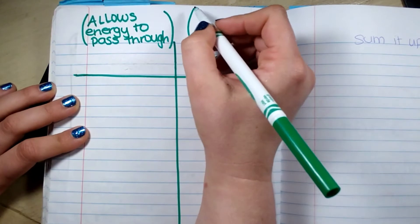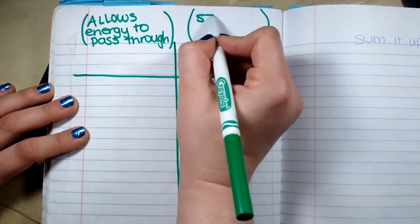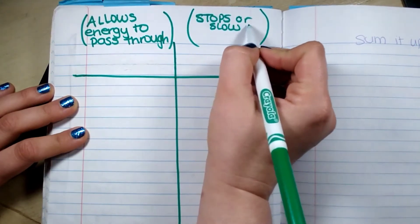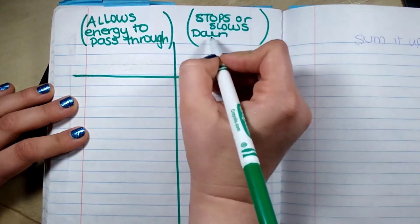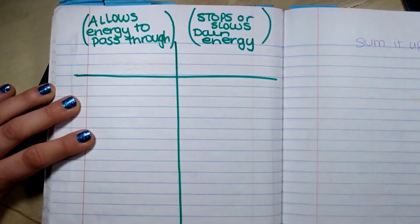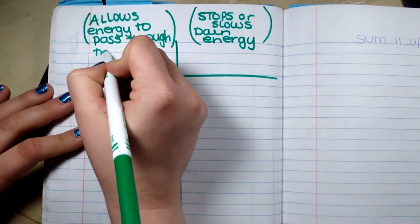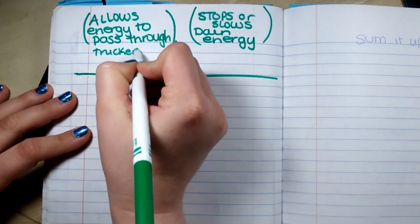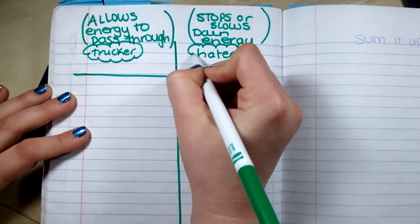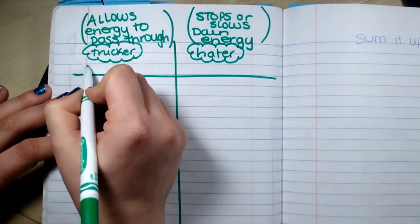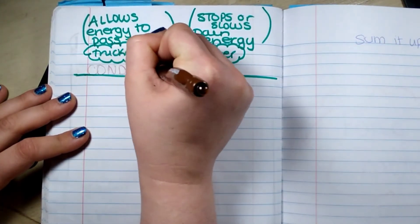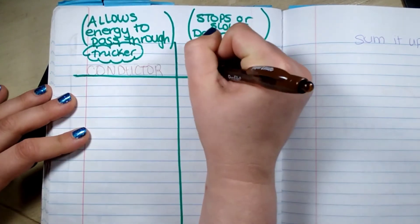And then it stops, or slows down. So we're going to call this the trucker, because it keeps trucking on through. And we're going to call this one the hater, because it doesn't let others through. This is the conductor, and this is the insulator.